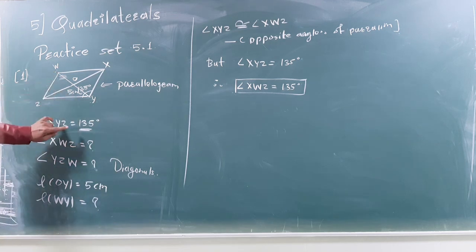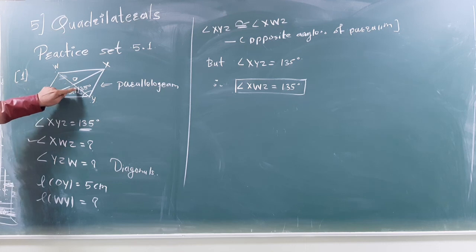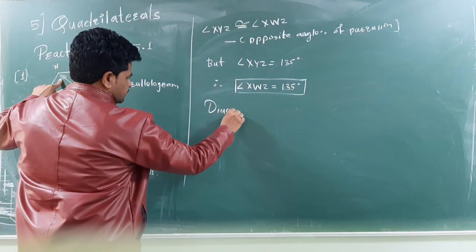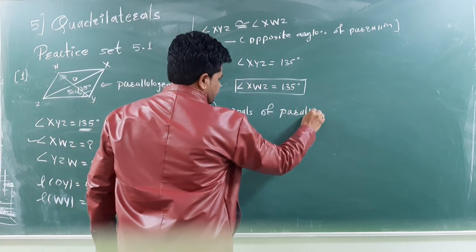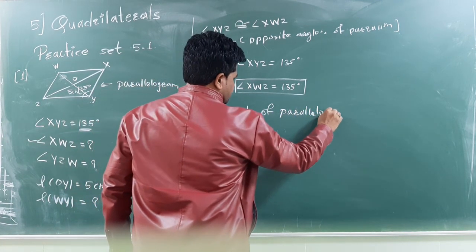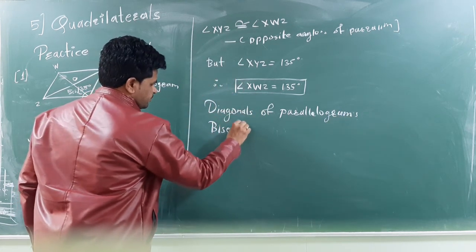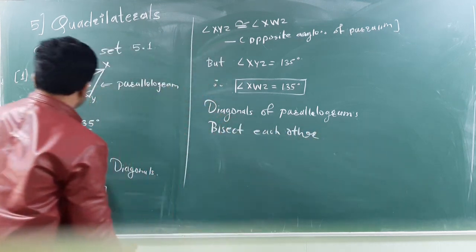And, we have to find here, WY. So, WY will be twice of OY. Because of this diagonal bisection. That is why, diagonals of parallelogram bisects each other.